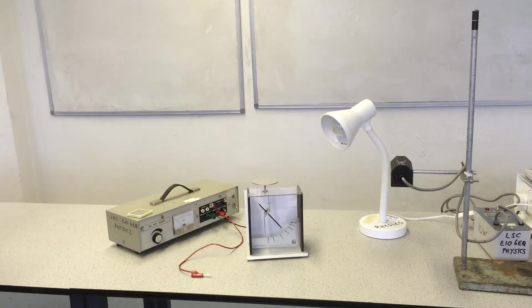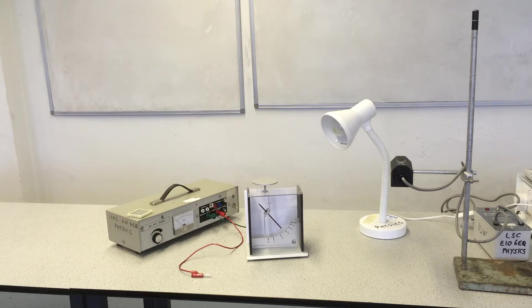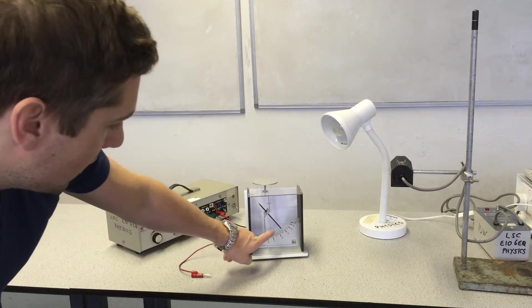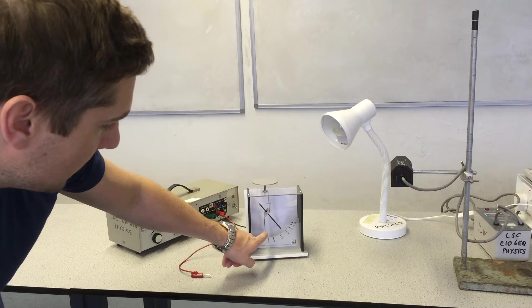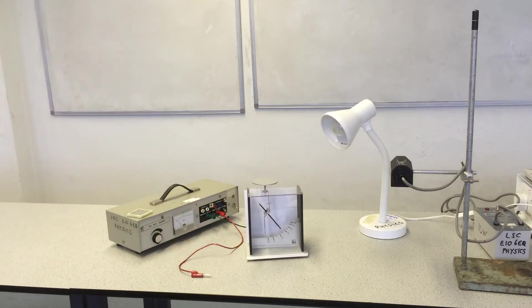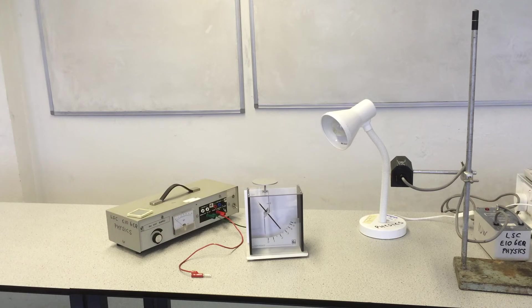So now the electroscope is charged, and you can see the deflection of the rod away from the stem down the bottom on that grade there.